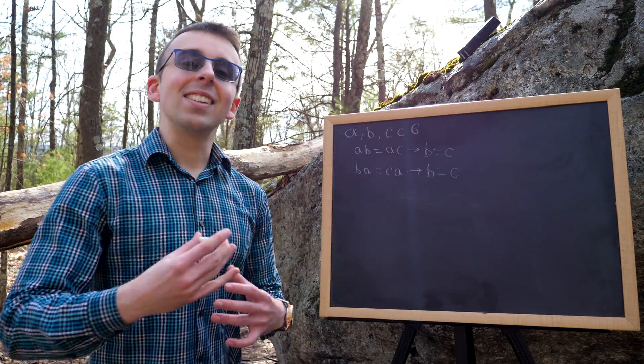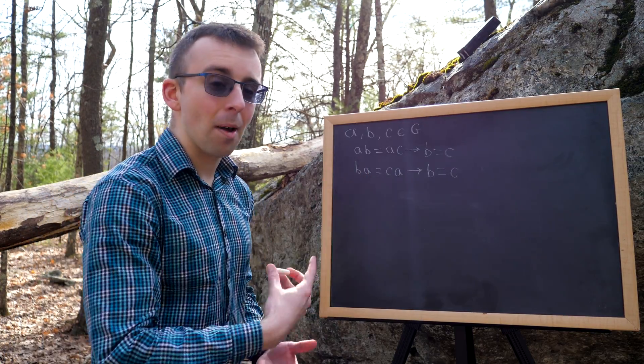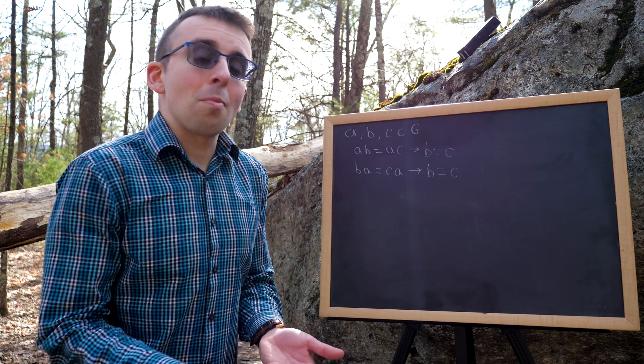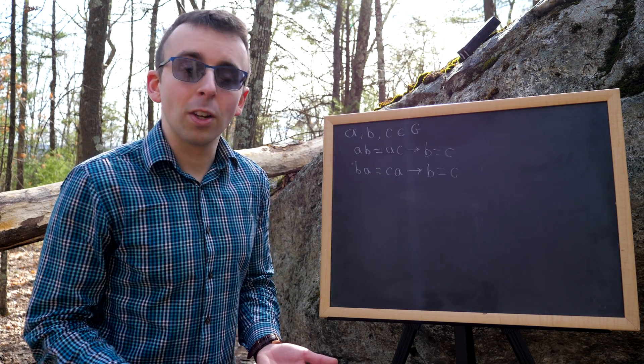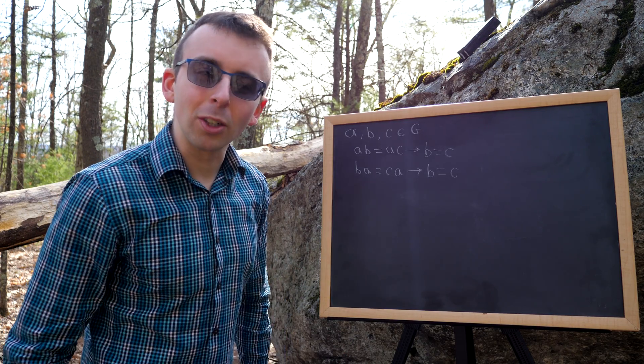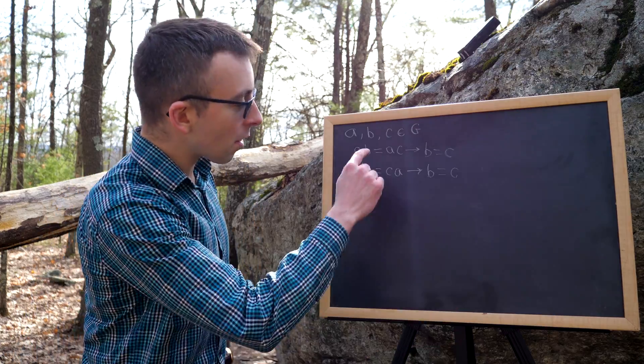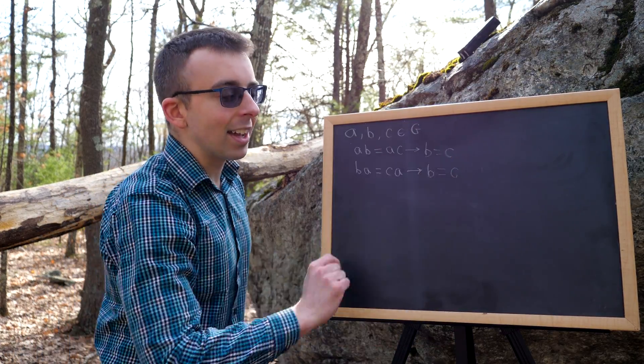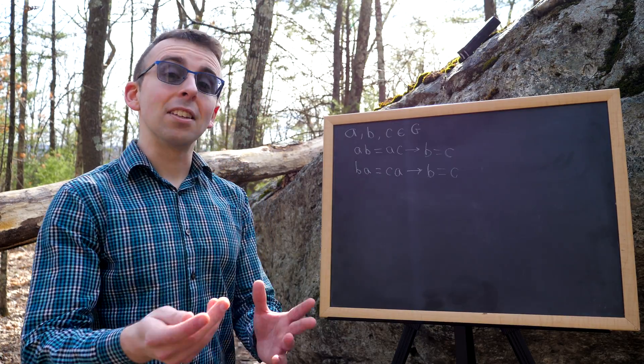Now, I'm going to say times to indicate this operation. I'm going to talk about it as if it is multiplication. Just remember, it's an arbitrary operation, but the words we use to describe multiplication are nice words, so I'm going to keep using them. First, let's prove this one. That AB equals AC implies that B equals C. It's super straightforward.